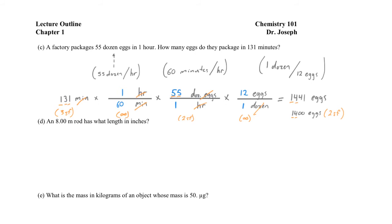Now let's move on to example D: an 8-meter rod has what length in inches? We need to convert meters, a metric unit, to the English unit inches. The best conversion factor to use is the well-known defined relationship between centimeters and inches: 2.54 centimeters equals one inch, which has an infinite number of significant figures.